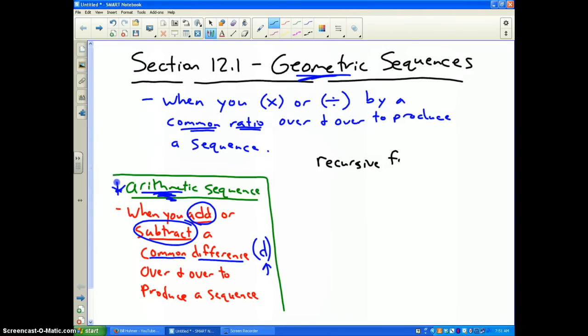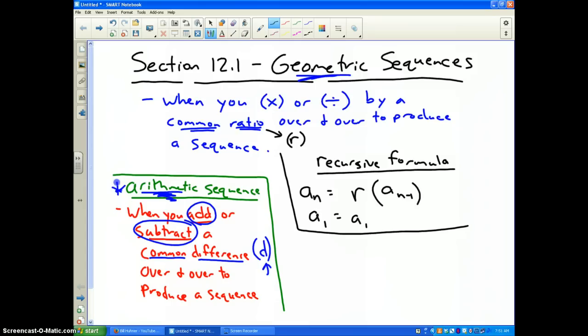Now the common ratio is called the letter R. In a recursive formula for any geometric sequence, the nth term is equal to the common ratio R times the prior term, a sub n minus 1. That's it. It's a very simple formula. So make sure you write that down and highlight that in your notes. And the first term is always just the first term. There's nothing special there, but that's recursive. That's the formula for any geometric sequence.